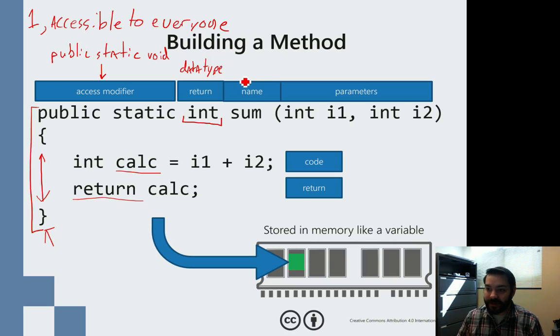So what we have to do is we have to say what we're going to be returning out of this. And next, we get our name. Again, if we think we've been doing public static void main, that's all we're doing is we're saying I need to give this method, this tiny little program, a name. So in this case, I'm just adding two numbers together, so I just called it the sum method.